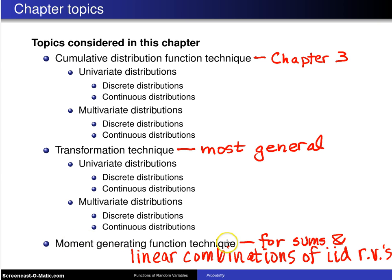So, the moment generating function technique is somewhat restricted and it's only useful for sums and linear combinations. Not as general as the transformation technique, but in certain settings, it can be quite useful.